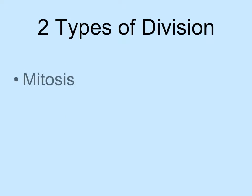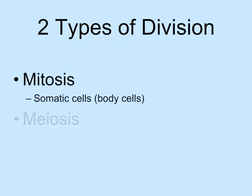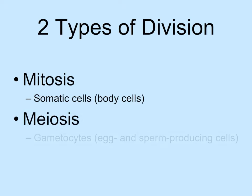There are two main types of cell division. Mitosis is when somatic cells divide and produce identical copies to the parent cell. Meiosis is when gametocytes divide to produce eggs and sperm. We will investigate mitosis first.